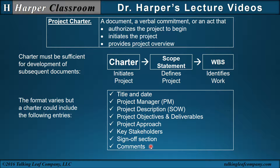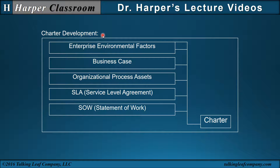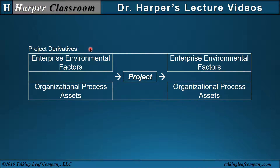Items not necessarily part of the Charter but related to the project include Charter development inputs: enterprise environmental factors (environmental constraints or regulations requiring compliance); business case (identifying the project's contribution to the organization); organizational process assets (internal assets that help support, direct, or define the project execution); SLA or service level agreement (which could identify project requirements); and SOW or statement of work (describing the details of deliverables). Some or all of these could be part of the Charter. Importantly, even though enterprise environmental factors and organizational process assets are inputs to a project, a project output should enhance and contribute back to those factors and assets.